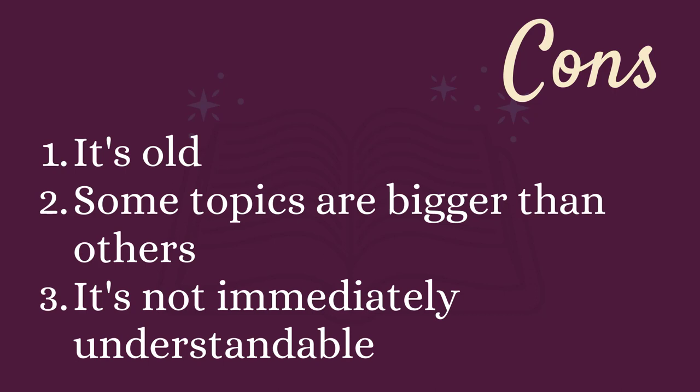Second, some topics are way bigger than others, which can be frustrating for libraries — if you want to display your entire section without putting books in storage, you might not be able to, since you only have so much shelf space. And third, it's not immediately understandable. You have to learn it and remember it. Yes, it's organized, but it's not always evident. For example, cookbooks are under 641.5 under Applied Sciences, and folktales are 398.2 under Social Sciences. This can be hard for some people, especially kids.